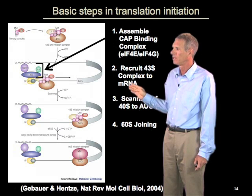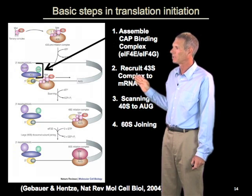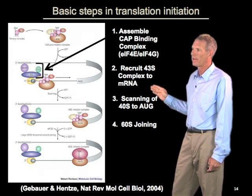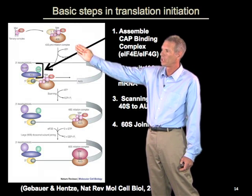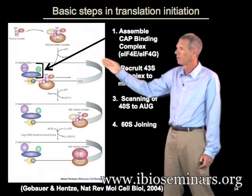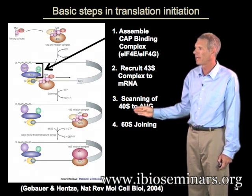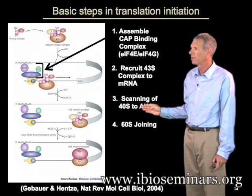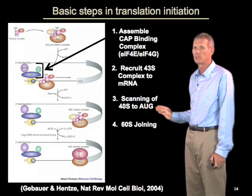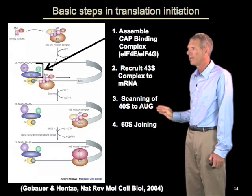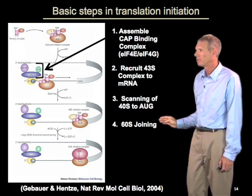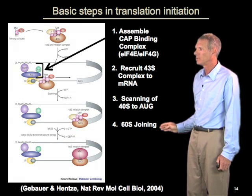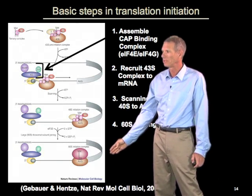That small ribosomal subunit is loaded on the mRNA in what's called a 43S complex. It's called that because it includes other factors, including initiator tRNA and some translation initiation factors. In a third step, that complex then scans down the mRNA looking for an AUG codon, and typically the first AUG is used in eukaryotic mRNAs. Once that AUG is recognized, there are various rearrangements of that complex, including GTP hydrolysis, which allow for the 60S — the large subunit of the ribosome — to join and then enter into the elongation phase.